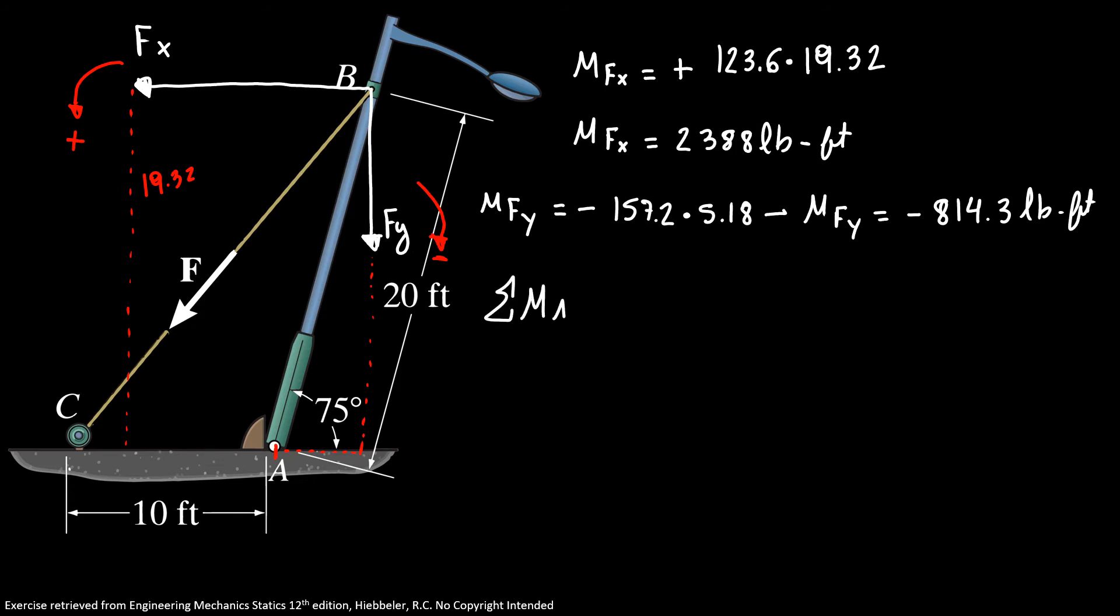Now, the sum of moments about A is equal to 1388 pounds-feet minus 814.3 pounds-feet. So, the sum of moments in A is equal to 574 pounds-feet. Notice that we have a plus, so we know that our direction is counterclockwise.